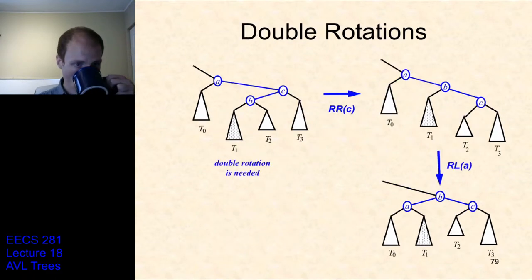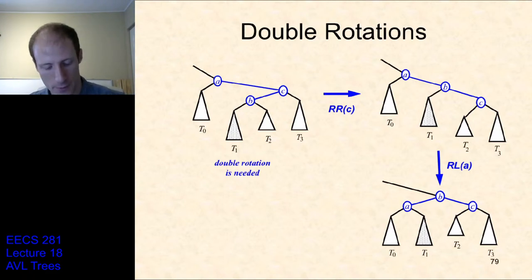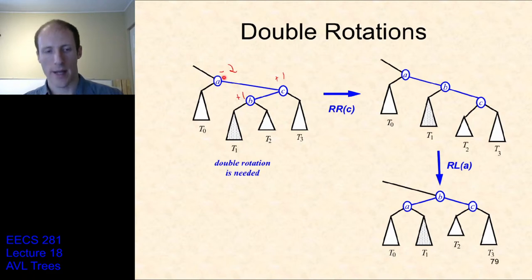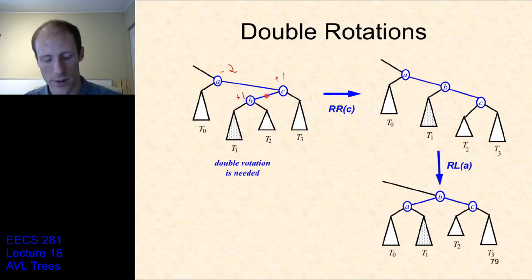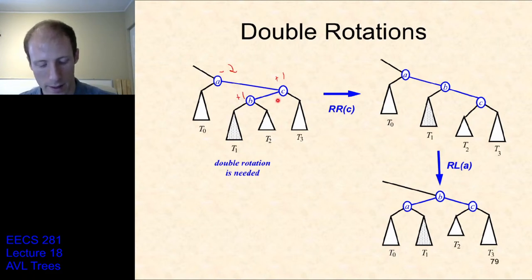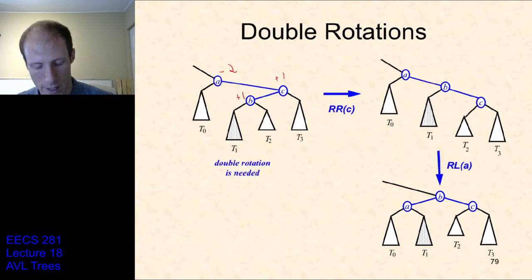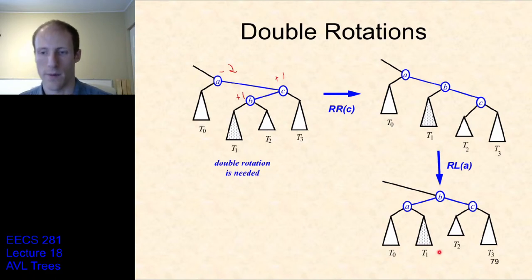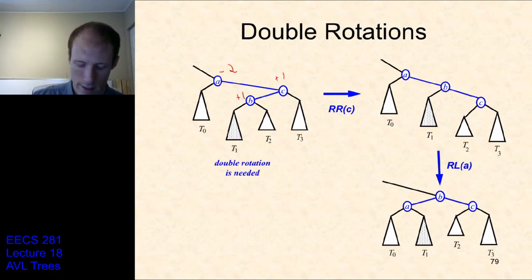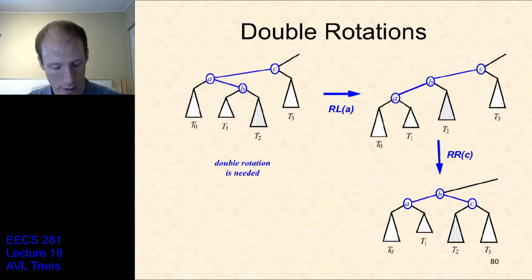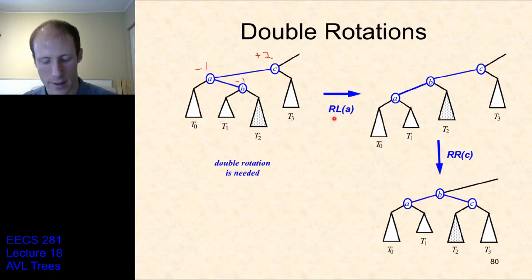When do we need a double rotation? When we have -2 at the parent and +1 at the child — signs disagree. We first do a right rotation at the child of the unbalanced node, making B the parent and C the right child. Then we do a left rotation at A, and the tree becomes balanced. For the mirror case, we start with a left rotation and then do a right rotation. These are the zigzag cases where the signs disagree between the unbalanced node and its relevant child.